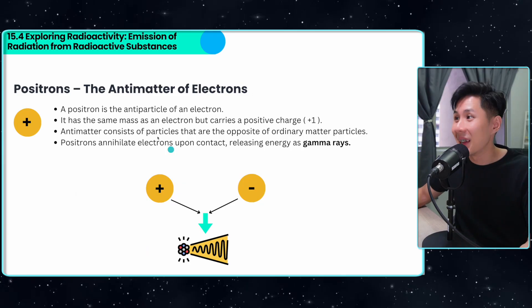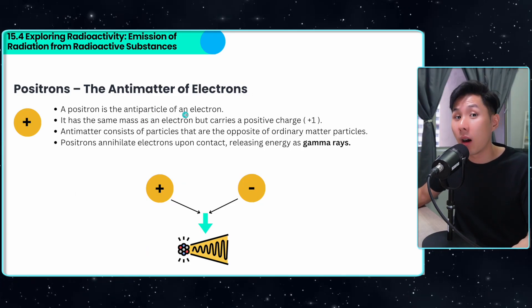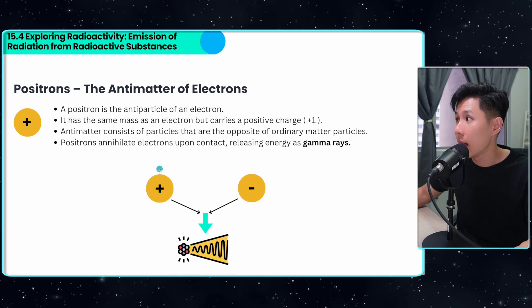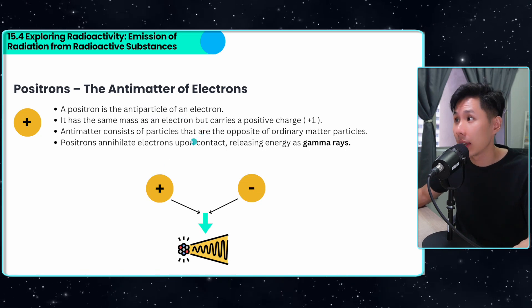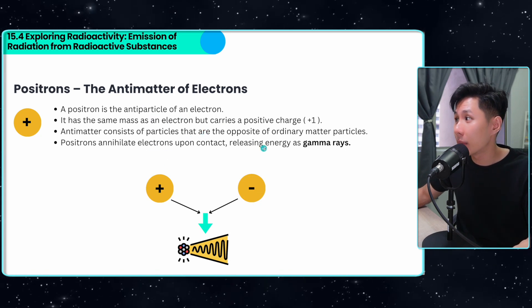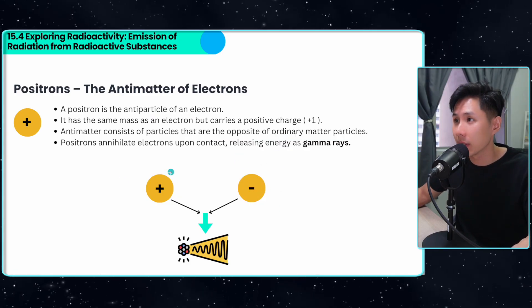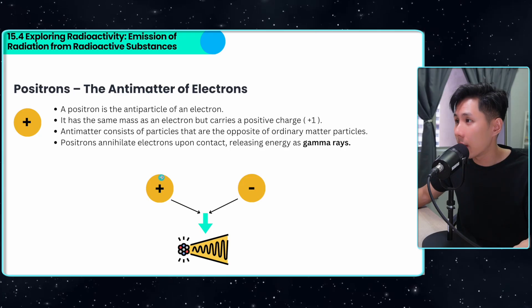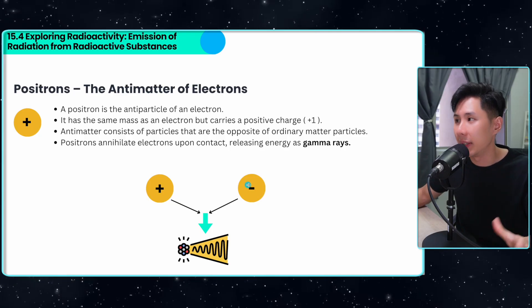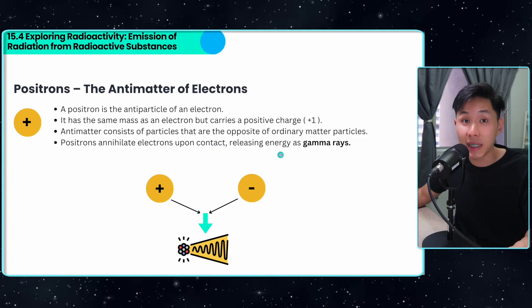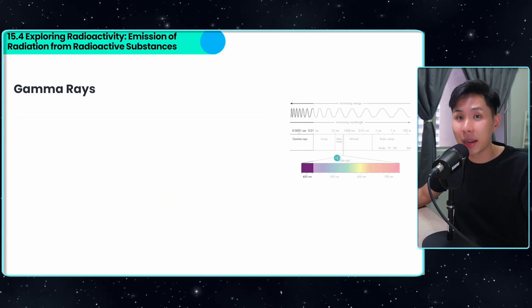We call it positron. Now what is a positron? It's called an antiparticle of the electron. It has the same mass, but it carries a positive charge. It consists of particles that are opposite of ordinary matter particles. So electrons are negatively charged, positrons positively charged. Positrons and electrons are destroyed completely upon contact, releasing energy as gamma rays, which leads us to gamma rays.